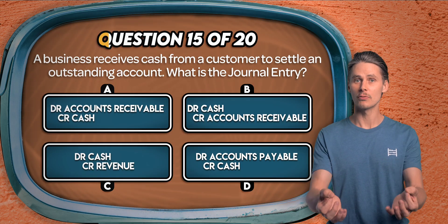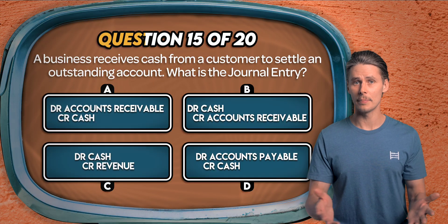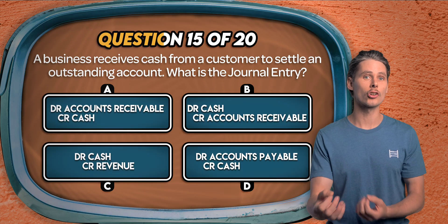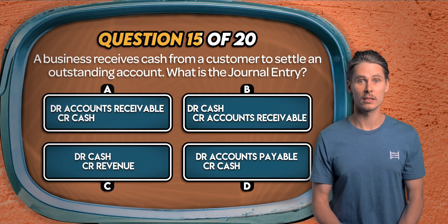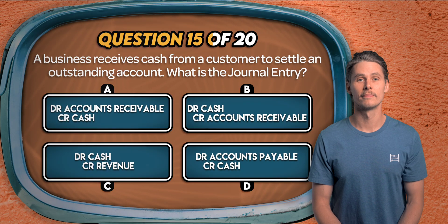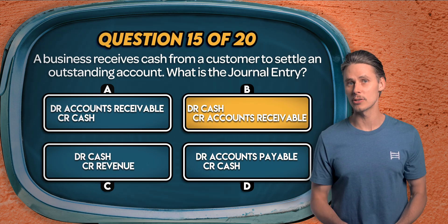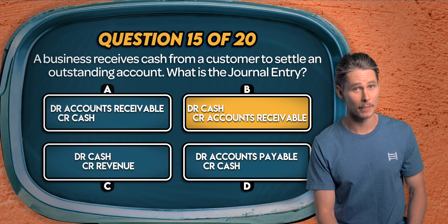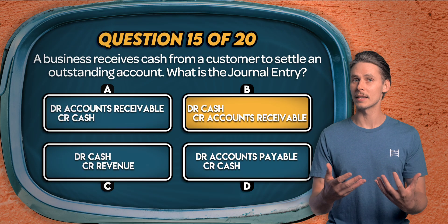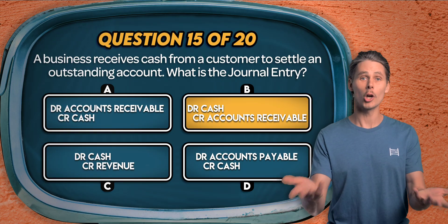Question 15. A business receives cash from a customer to settle an outstanding account. What is the journal entry? Is it debit accounts receivable credit cash, debit cash credit accounts receivable, debit cash credit revenue, or debit accounts payable credit cash? It's B. When a customer pays off their outstanding balance, we debit cash to increase it and credit accounts receivable to reduce the amount owed. This transaction converts one asset, accounts receivable, into another asset, cash — so total assets stay the same.